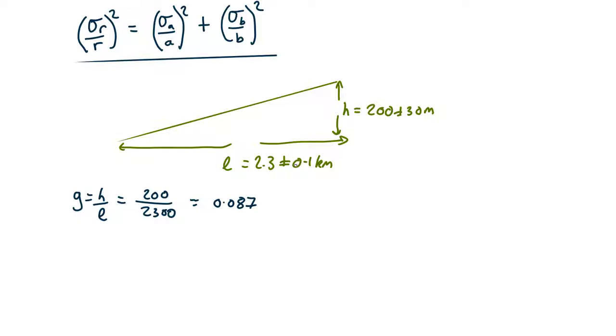Now let's work out the uncertainty. So we will use the equation up here. The uncertainty in the gradient divided by the gradient squared equals the uncertainty in the length, 0.1 over 2.3 squared, plus the uncertainty in the height, 30 over 200 squared.